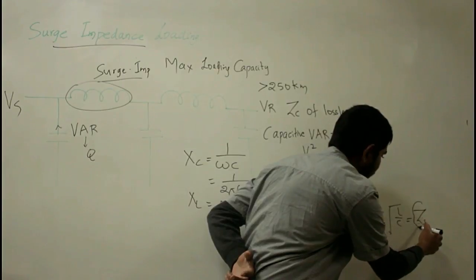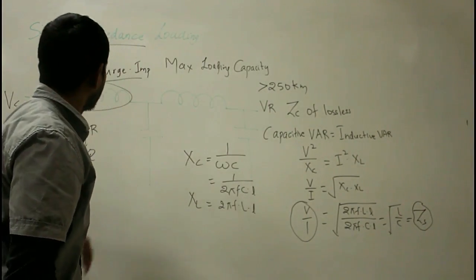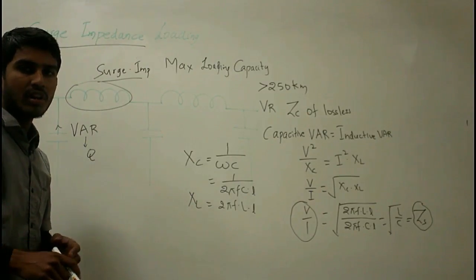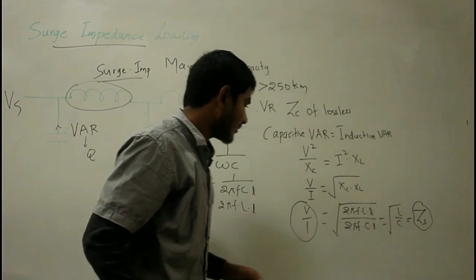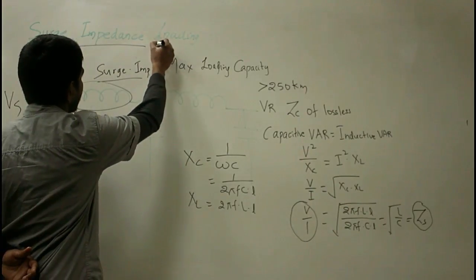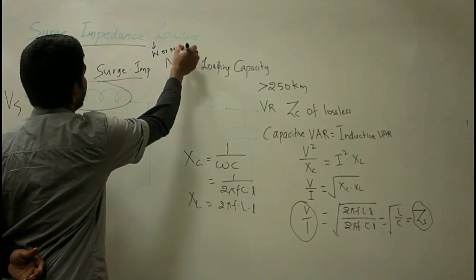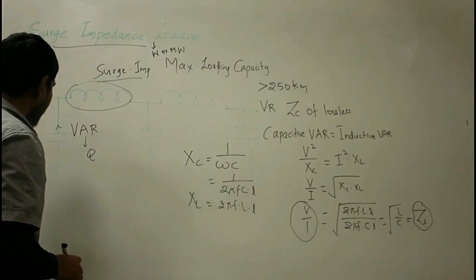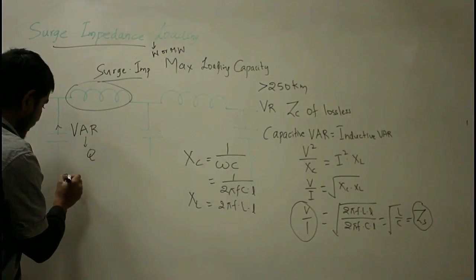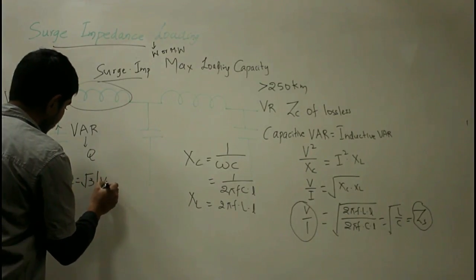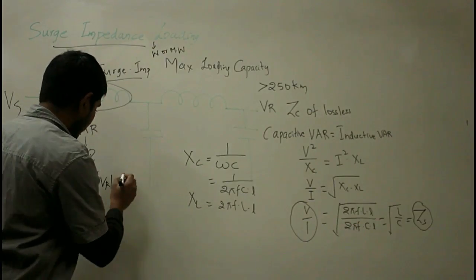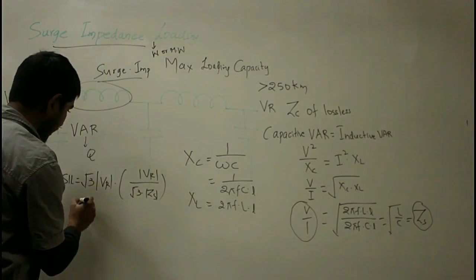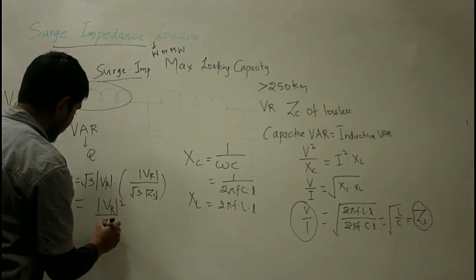Surge impedance loading (SIL) is defined as the power delivered by a line to a purely resistive load which is equal in value to the surge impedance. The units of SIL may be watts or megawatts. Calculating the power delivered: SIL = √3 × VR × (VR / (√3 × ZS)) = VR² / ZS. This is the surge impedance loading formula.